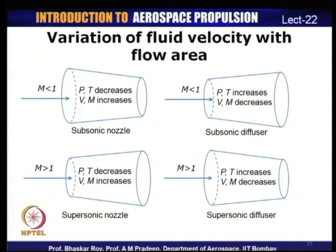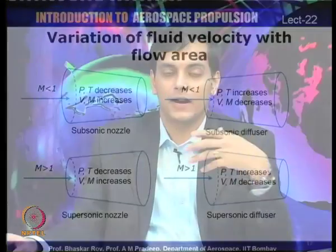This is the outcome of the area-velocity-Mach number relation we derived. We now know how the area must change given a certain Mach number to achieve an increase or decrease in velocity accordingly.